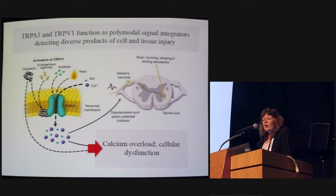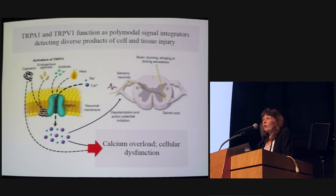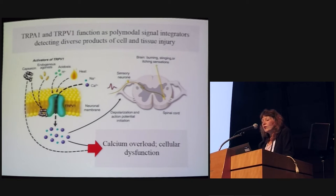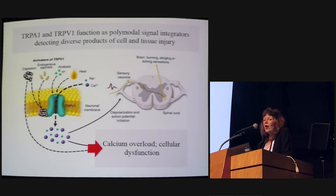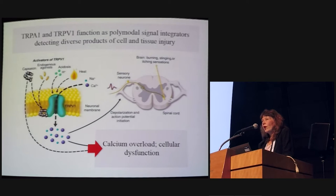In general, TRPA1 and TRPV1 function as polymodal signal integrators. These channels can detect a diverse range of cellular products produced during inflammation, oxidative stress, and injury. This leads to cellular overload, increased cellular dysfunction, and increased cellular calcium. The net result, depending on the tissue, can include burning, stinging pain, itching sensations, and overactivity with alterations in sensory function.